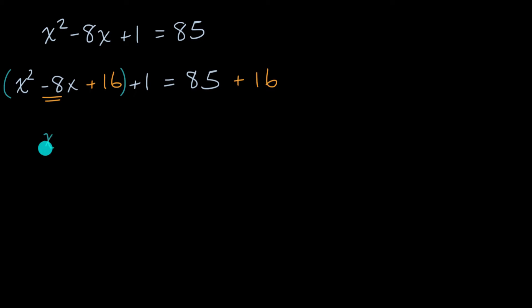This is the same thing as x minus four squared. It was by design. We looked at that negative eight, half of that is negative four. You square it, you get 16. And you can verify, x minus four times x minus four is indeed equal to this. And then we have plus one is going to be equal to, what's 85 plus 16? That is 101.